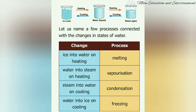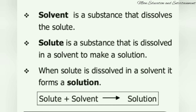The processes involved in melting of ice: when ice melts into water on heating, we call it melting; when water turns to steam on heating, we call it vaporization; when steam turns to water on cooling, we call it condensation; and when water turns to ice on cooling, we call it freezing. Now let us learn about solvent, solute, and solution. By mixing sugar with water, we get a new solution. The solvent is the substance that dissolves the solute — water is the solvent. The solute is the substance dissolved in the solvent — sugar is the solute. Solute plus solvent gives us a solution.